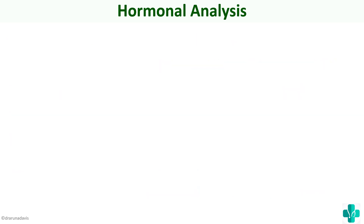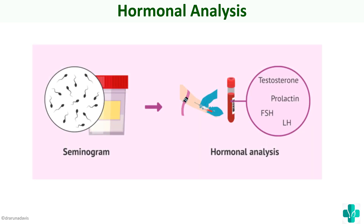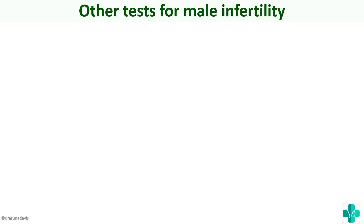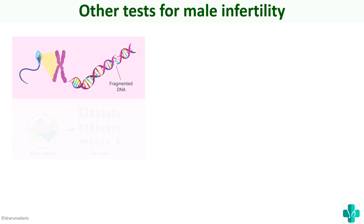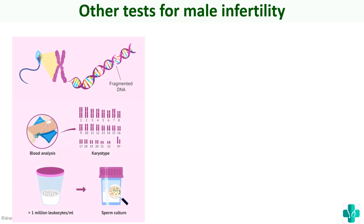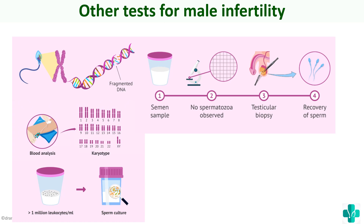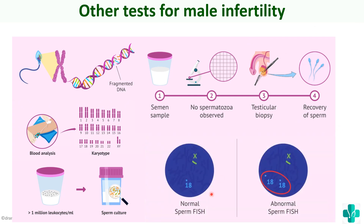For hormonal analysis, we test the levels of prolactin, testosterone, FSH, and LH to check for any pre-testicular causes. Other tests for male infertility include DNA analysis, karyotyping, sperm culture if there are elevated WBCs, testicular biopsy if the semen sample does not contain spermatozoa, and sperm FISH — an immunological study done to identify any chromosomal abnormalities.